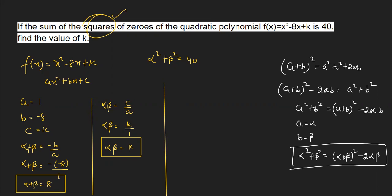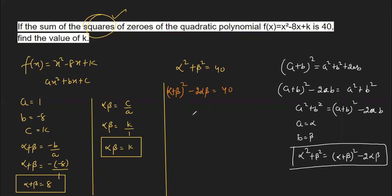Applying the formula: instead of α² + β², we write (α + β)² - 2αβ = 40. Substituting α + β = 8 and αβ = k, we get 8² - 2k = 40, which gives us 64 - 2k = 40.